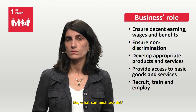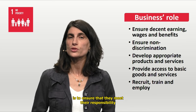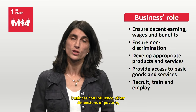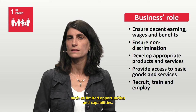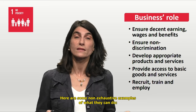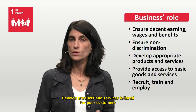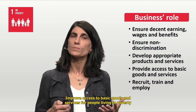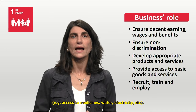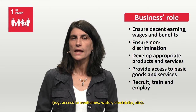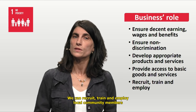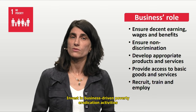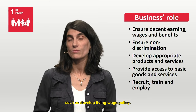One of the key roles of business is to ensure that they meet their responsibility to respect human rights. But beyond income, business can influence other dimensions of poverty such as limited opportunities and capabilities. Examples include developing products and services tailored for poor customers — such as mobile-based money transfer services for unbanked consumers — improving access to medicines, water, and electricity, recruiting and employing local community members including those living in poverty, and investing in business-driven poverty eradication activities such as living wage policies.